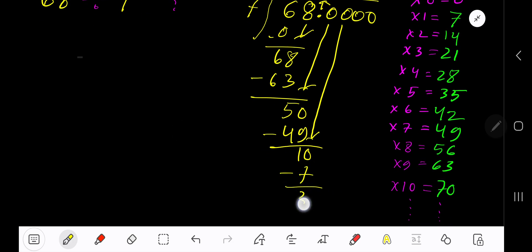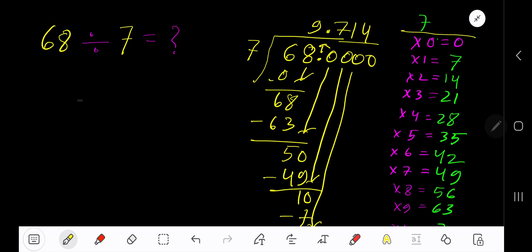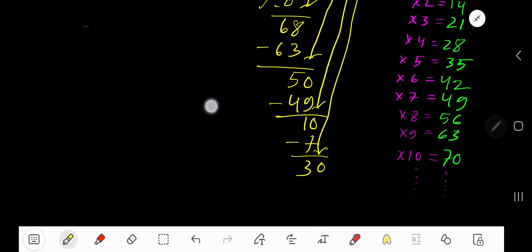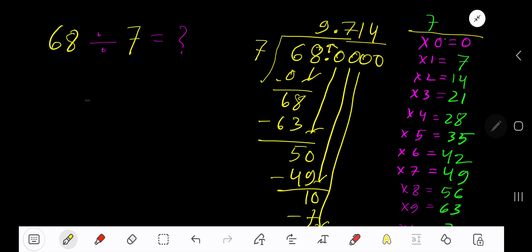Bring down another zero. 7 goes into 30 how many times? 5 times is 35, which is greater, so 4 times. 4 times 7 is 28. Subtract, 2. You can bring down more zeros, but since we have gotten 3 places after decimal, we can stop here.